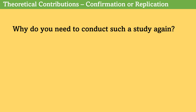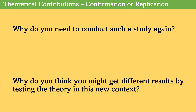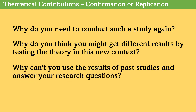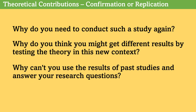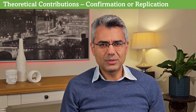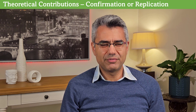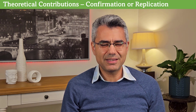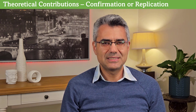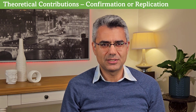There is usually a large body of research established on testing a theory. So to replicate these studies and to retest a theory, you need to have a strong justification. You should explain why you need to conduct such a study again, why you might get different results by testing the theory in this new context, and why you can't use the results of past studies to answer your research questions. What makes this setting or context unique? One of the most common justifications is the lack of research in that context.